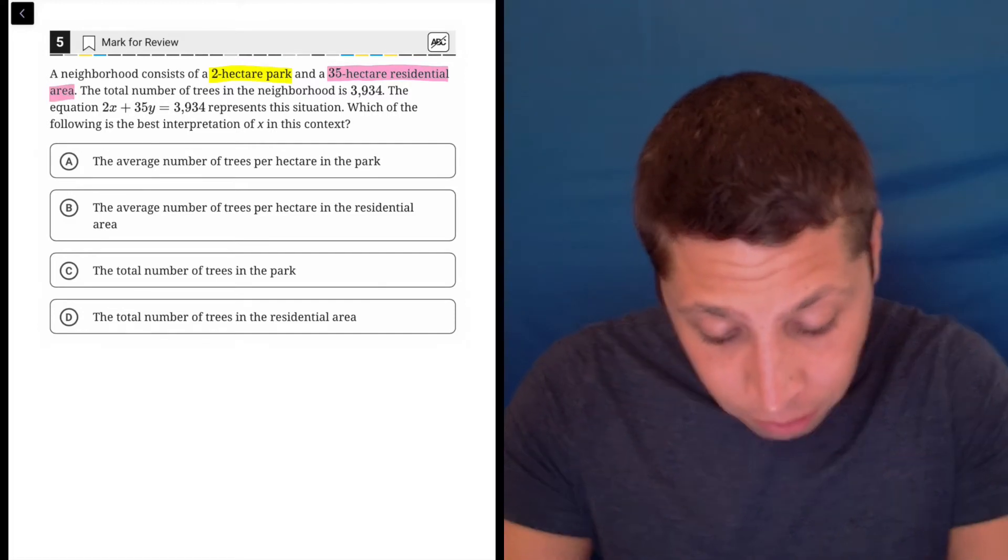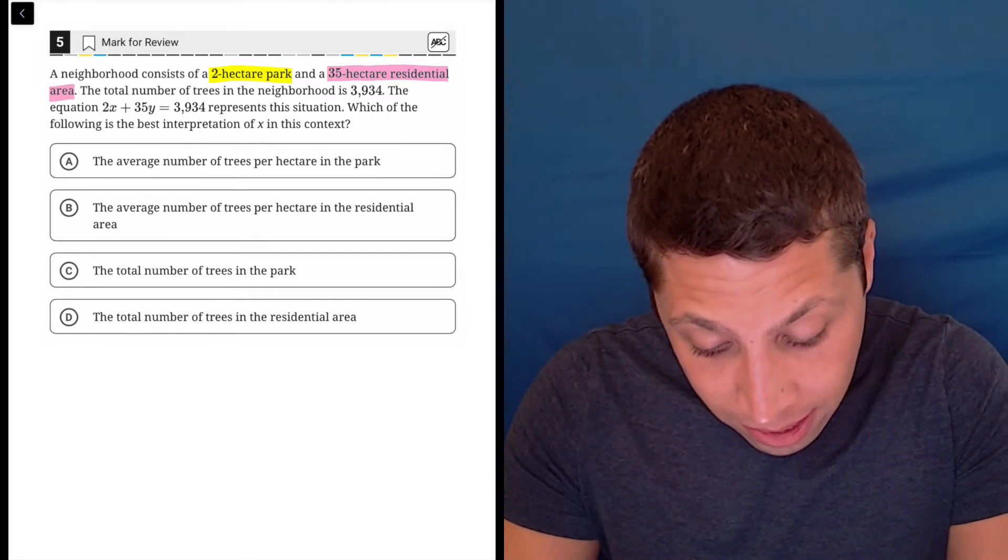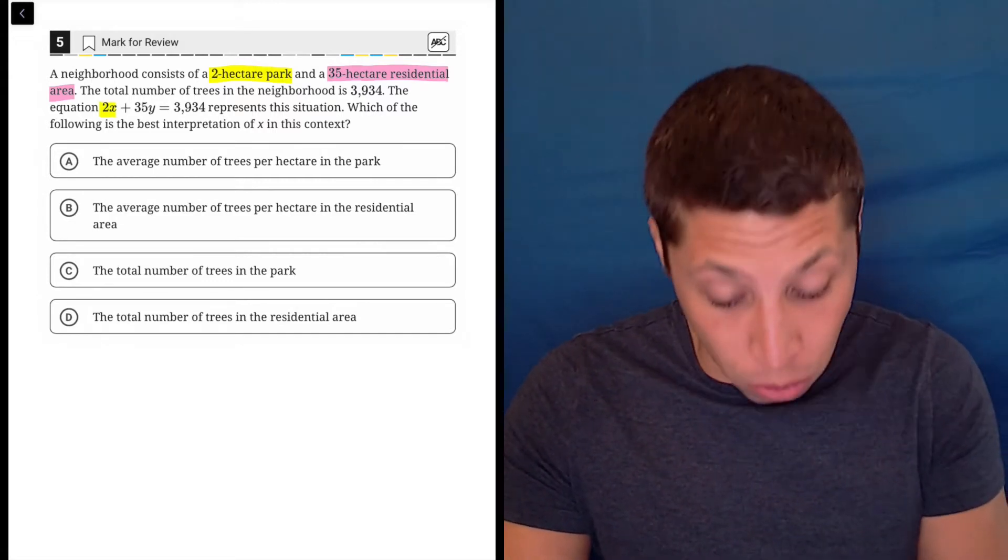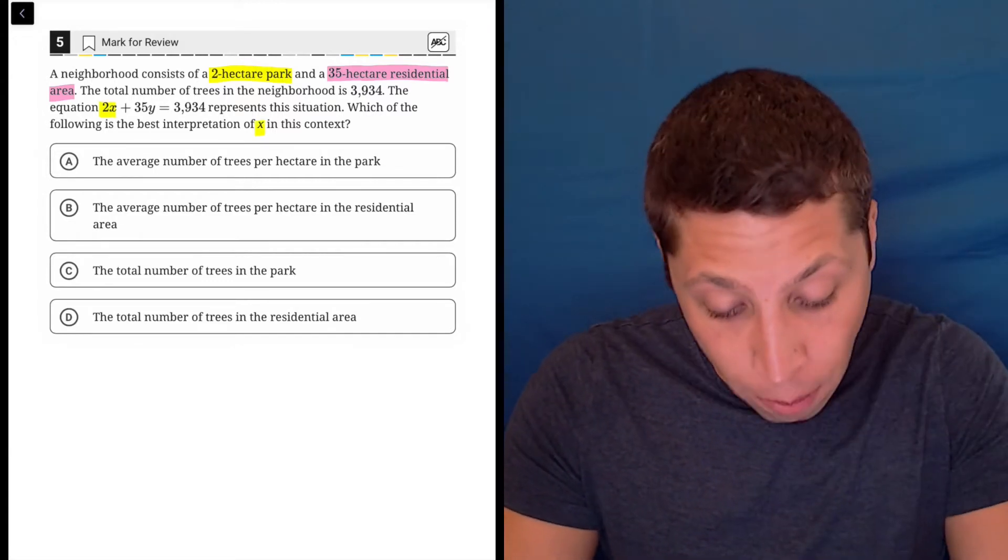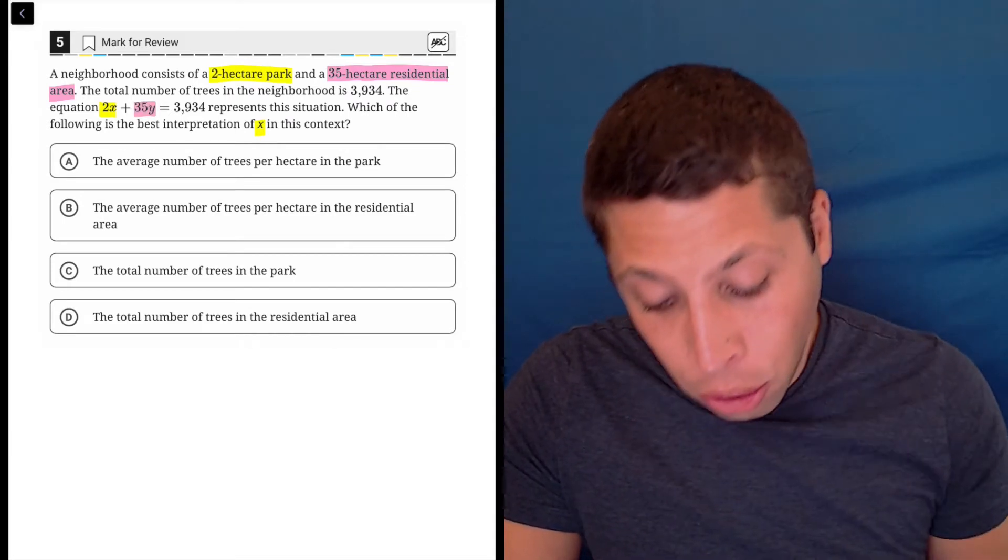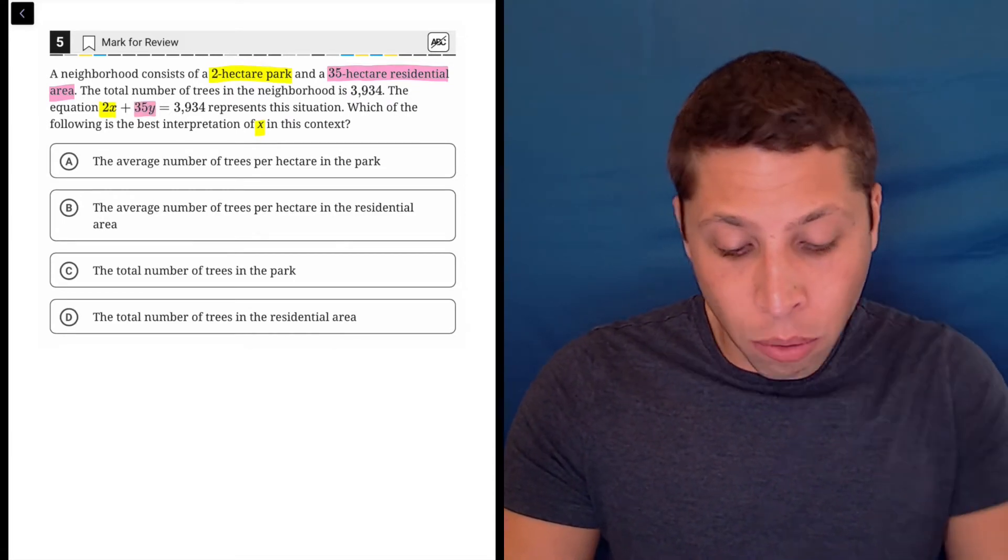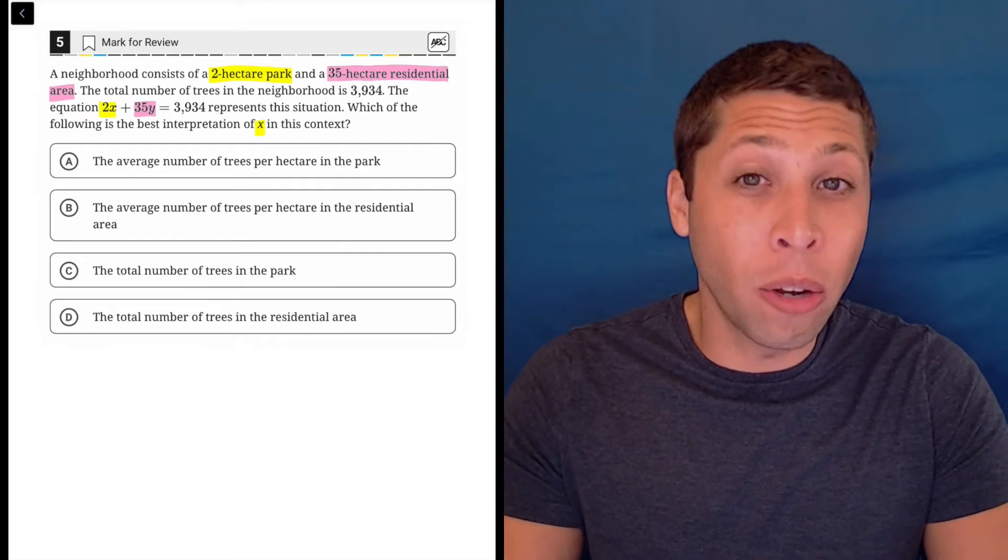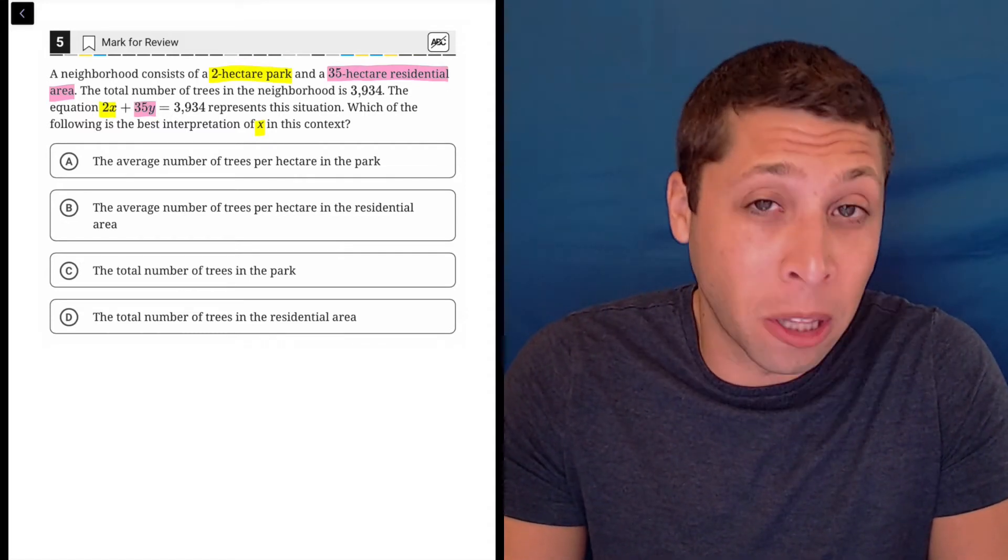Now, when they ask for the x, we can see in the equation that the x is attached to the two. So the two goes with the park and the y and the 35 go together. So now I'm not really thinking yet about what the x means. I just know that it has something to do with the park.